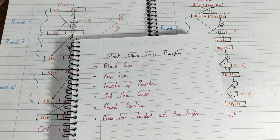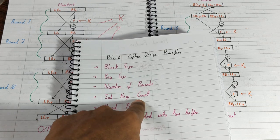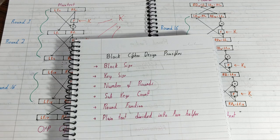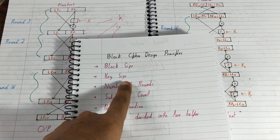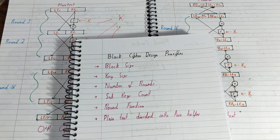In summary: the subkey count equals the number of rounds; the greater the number of rounds, the greater the complexity. The key size equals the plaintext size, and the block size equals both the plaintext size and the ciphertext size. This was all about Feistel block cipher structure. If you liked the video, do hit the like button, consider subscribing, and thanks for watching.